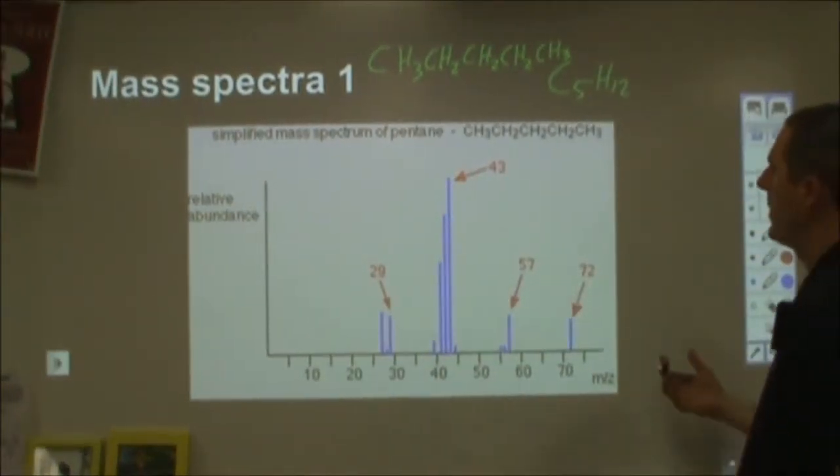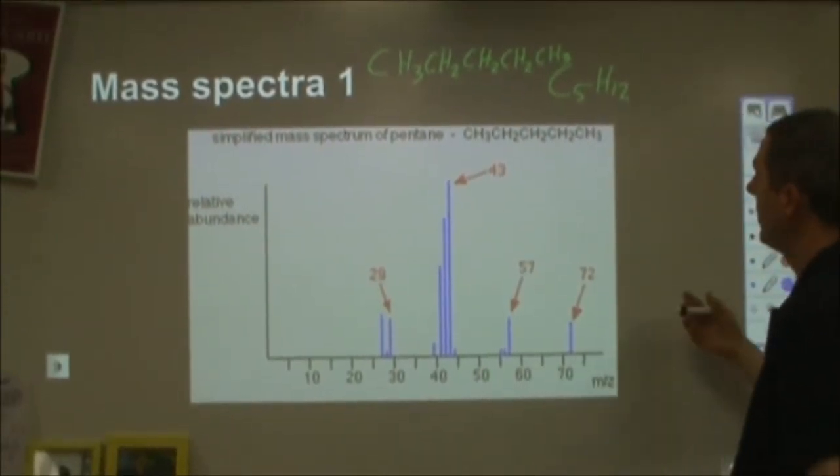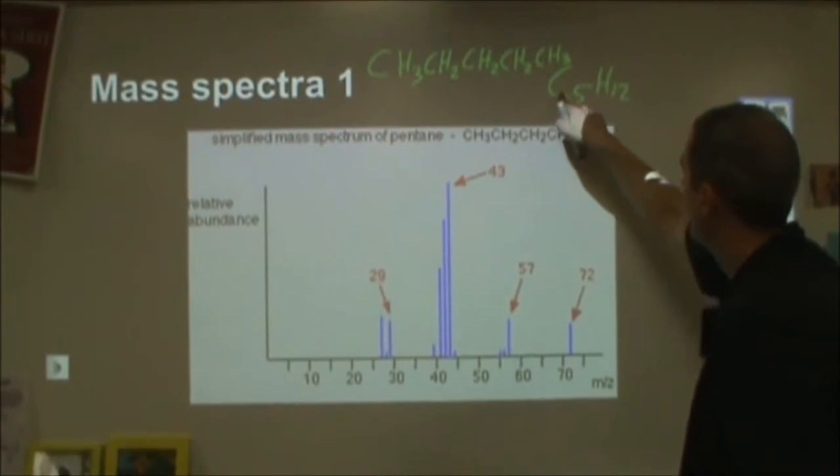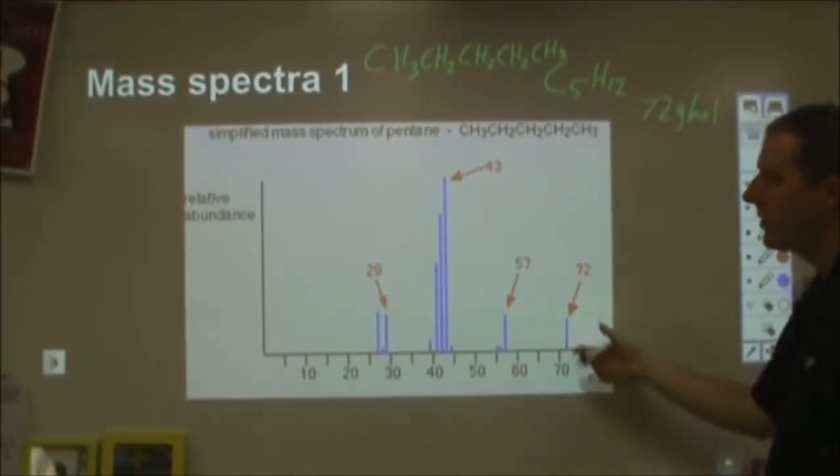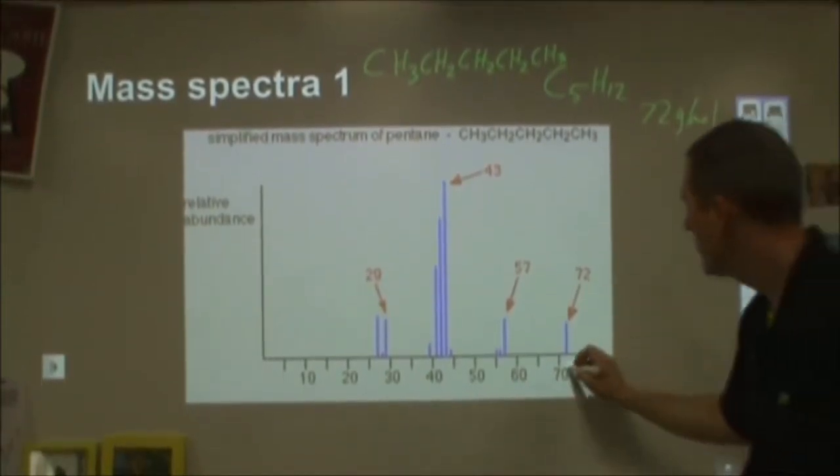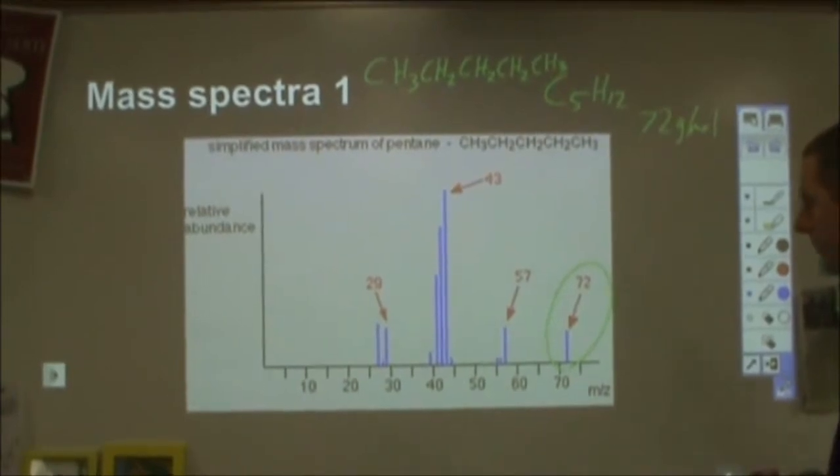And here is our mass spectra. So one of the important things you can see from the mass spectra is, hopefully, you can see a peak at the molar mass. So this is 60 and 12, that's 72 grams per mole. And here we see a 72 peak. So this is the peak of the entire molecule when it obtains a plus one charge.